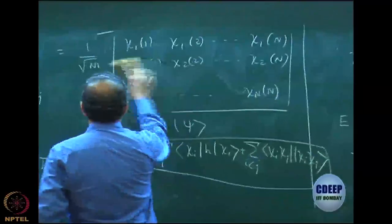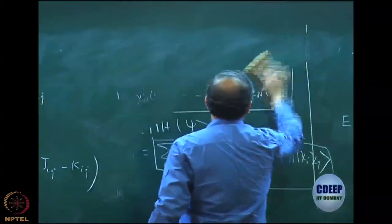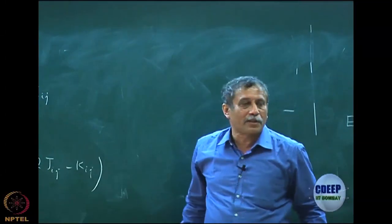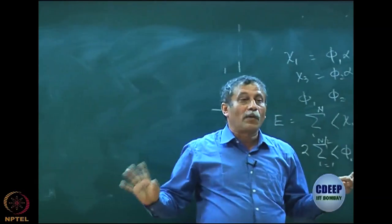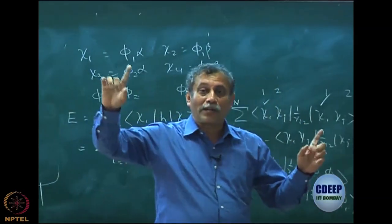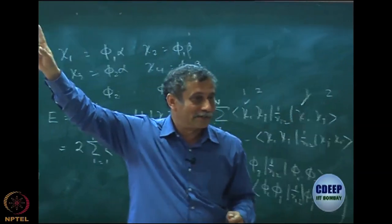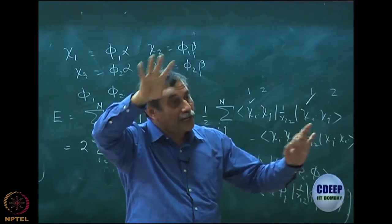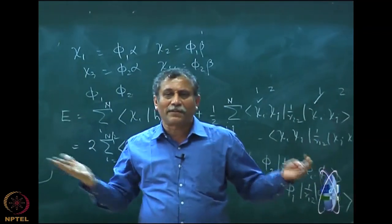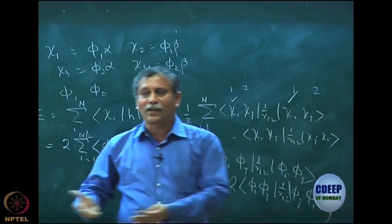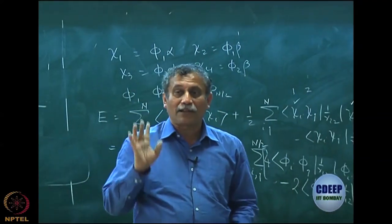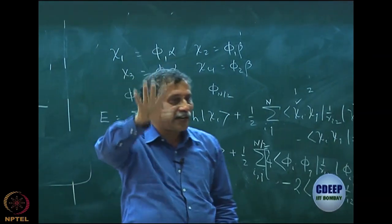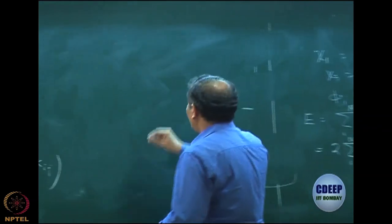Let us take an example: the helium atom. Helium atom has two electrons in one spin space orbit — we normally call it 1s. But we have to be careful because whatever we call 1s has to be obtained by Hartree-Fock. Let us call it 1s; it is a common chemist notation. This 1s is actually a misnomer — it is 1s for the helium atom, different from 1s for the hydrogen atom.